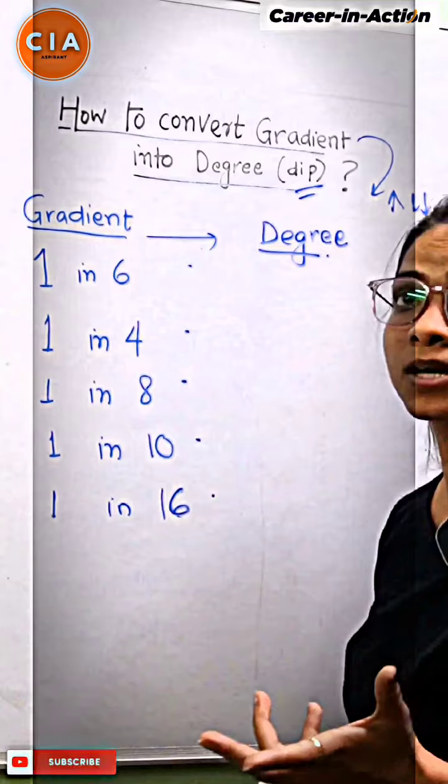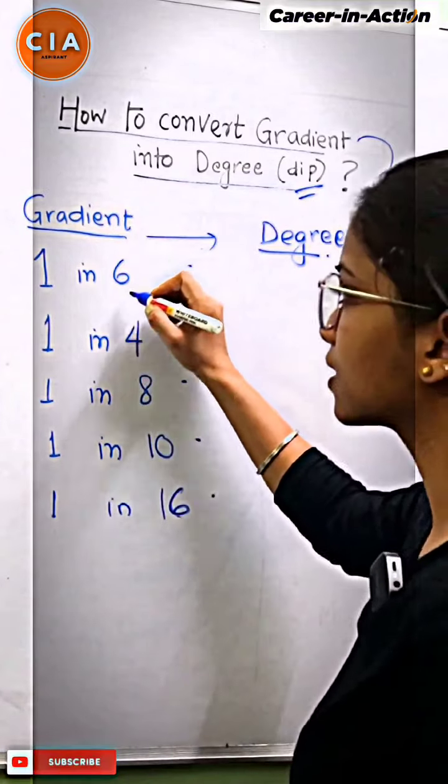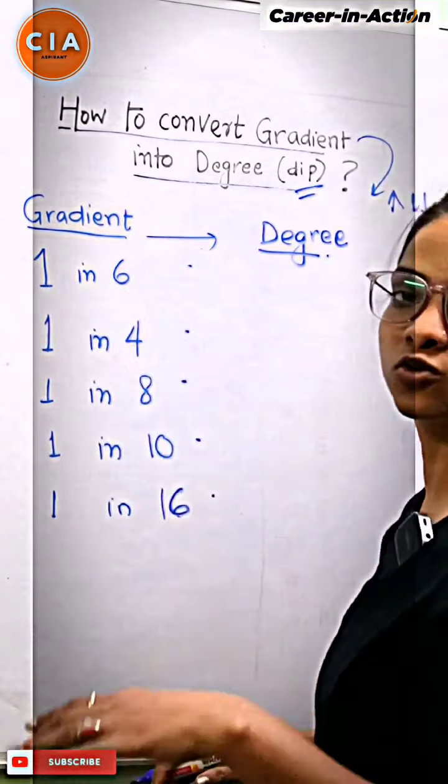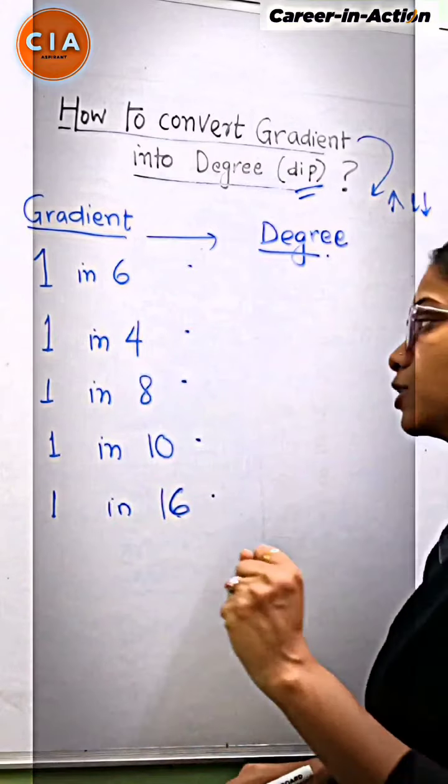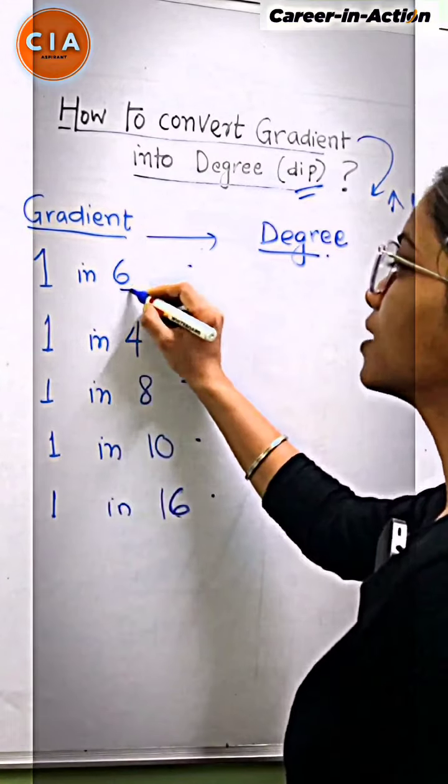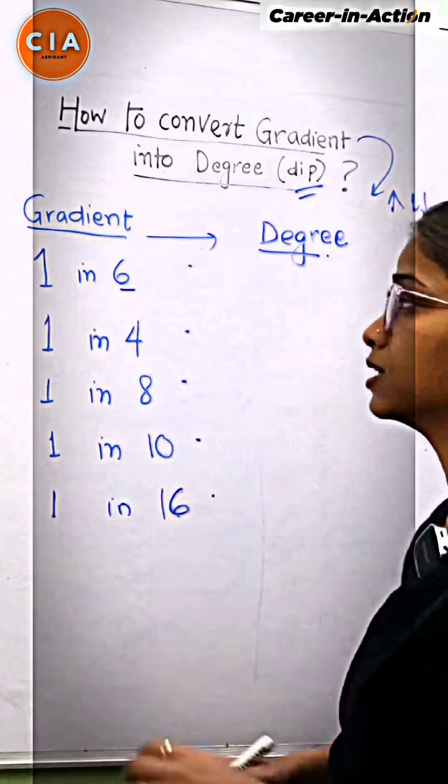Here 1 in 6 is written. What does that mean? 1 in 6 means that every 6 meters, 1 meter is down. Every 6 meters is 1 meter down. This is the gradient.